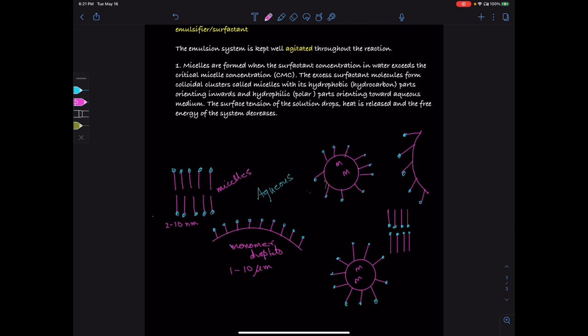So how does the chain initiation and propagation happen? First, the initiator releases radicals in the aqueous medium. These radicals get into the micelle and trigger the chain propagation. The chain propagation continues as the monomers inside the particle get consumed.